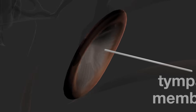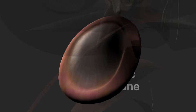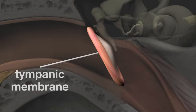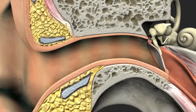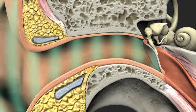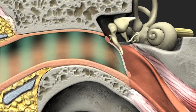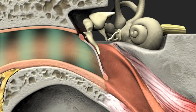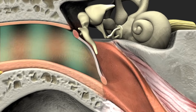The tympanic membrane is concave with an area of between 60 and 90 millimeters and an average thickness of just seven hundredths of a millimeter, and it has a very rich blood supply. Sound waves enter the ear canal and strike the tympanic membrane, setting it in motion.